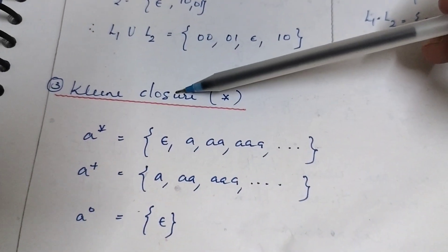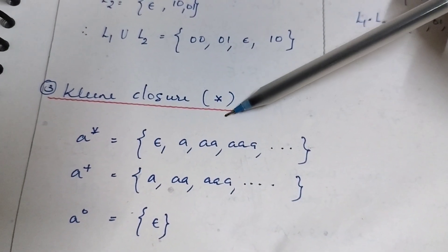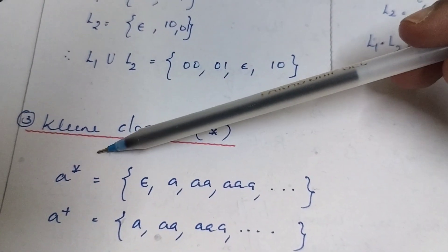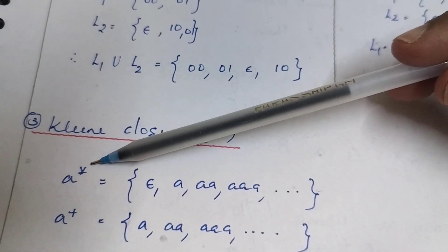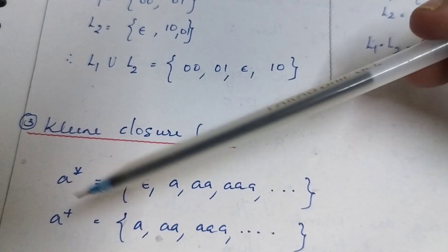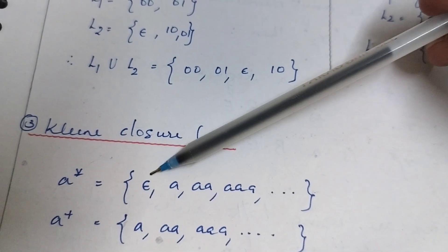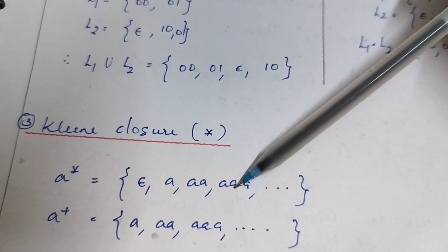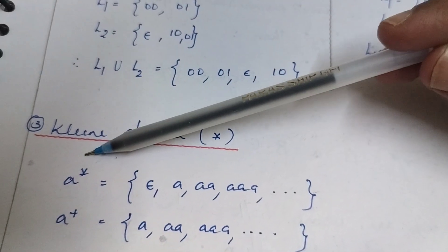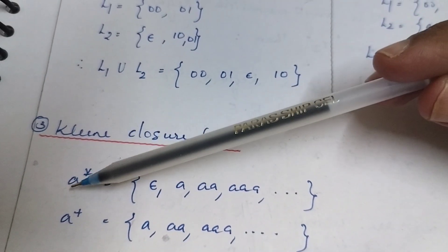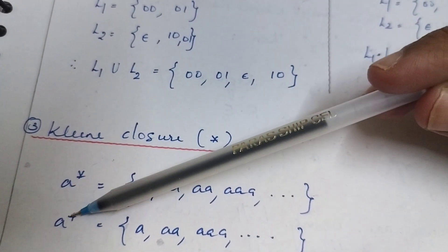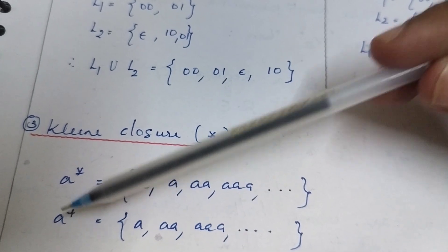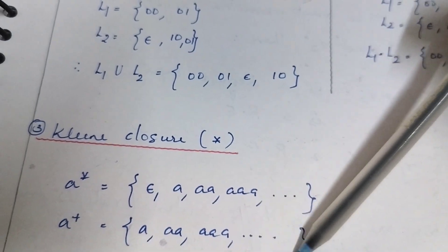Then Kleene closure, represented by a star. A* means zero or more combinations of A. Zero repetitions gives epsilon; then A, AA, AAA, and so on. That is A*. A+ means one or more combinations of A: A, AA, AAA, and so on.